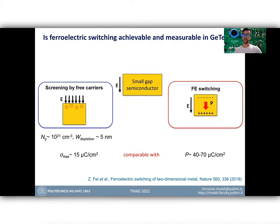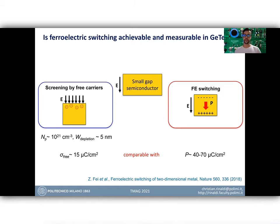Concerning ferroelectric gating, the question is: can we switch a semiconductor which is highly doped? Germanium telluride has 10²¹ cm⁻³ free carriers due to germanium vacancies in the lattice. Considering a depletion region of five nanometers, this gives germanium telluride the ability to accommodate about 15 µC/cm² when an external electric field is applied. Ferroelectric switching can bring up to 70 µC/cm² to the surface, meaning ferroelectricity is a more effective mechanism than free-carrier screening to respond to an external electric field — so switching could be achievable.